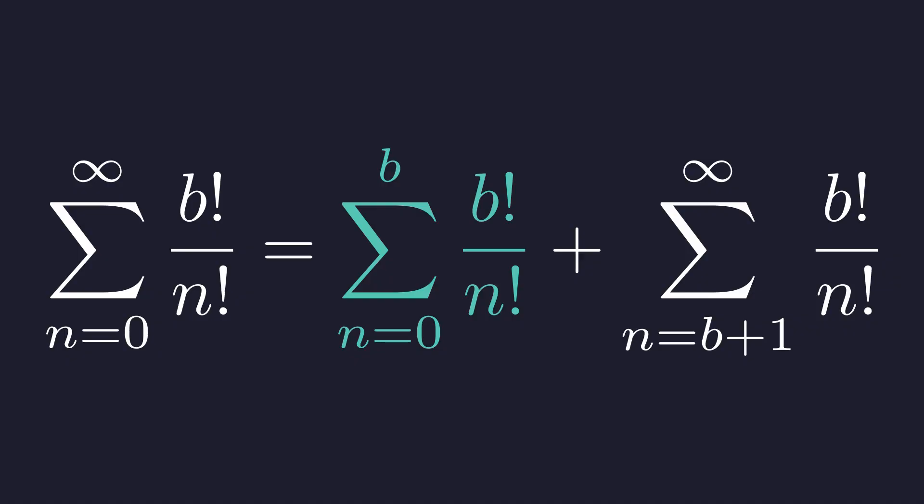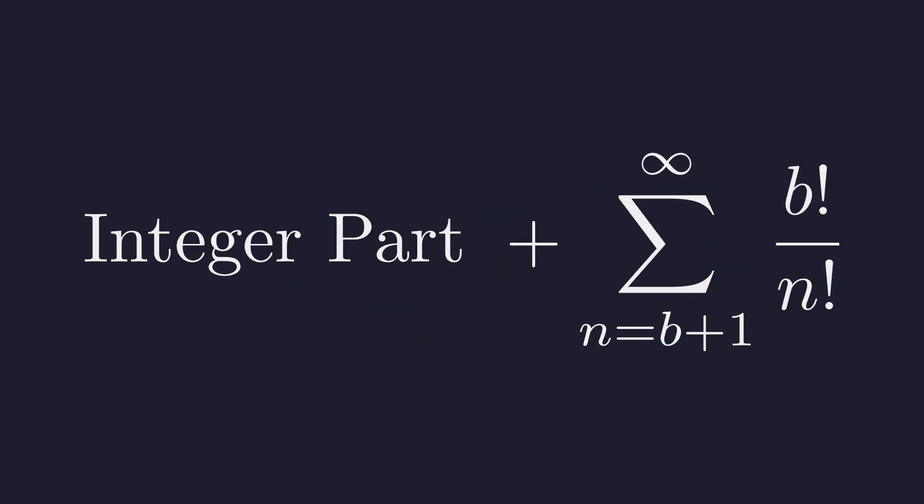Let's examine this first group. For any term where N is less than or equal to B, B factorial divided by N factorial is an integer. Therefore, this entire first part is a sum of integers, which means it must be an integer itself. We'll call it M.